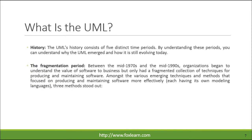The UML's history consists of five distinct time periods. By understanding these periods, you can understand why the UML emerged and how it is still evolving today. The fragmentation period, between the mid-1970s and the mid-1990s, organizations began to understand the value of software to business but only had a fragmented collection of techniques for producing and maintaining software. Amongst the various emerging techniques, each having its own modeling languages, three methods stood out.